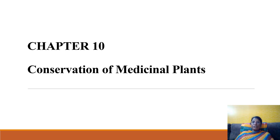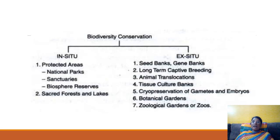Today we are going to understand about conservation of medicinal plants, both in-situ and ex-situ conservation, and how we take different methods to conserve biodiversity. There are two ways of conservation: one is to conserve the resource within its natural habitat, that is called in-situ, and the second is outside the natural habitat, that is ex-situ.